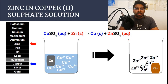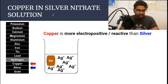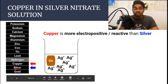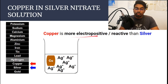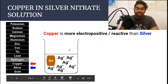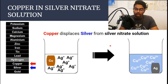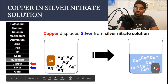Now let's look at the reaction between copper and silver nitrate. We need to identify the positions of copper and silver in the electrochemical series. Copper is above silver, which means copper is more electropositive and more reactive than silver. Therefore copper is able to displace silver out of silver nitrate solution. Silver nitrate solution is colorless, and copper is a brown solid. When we add copper to the silver nitrate solution, copper displaces silver as silver solid — which is shiny gray — so the brown solid will have a shiny gray deposit around it.